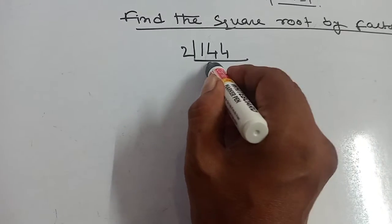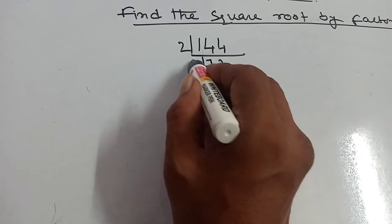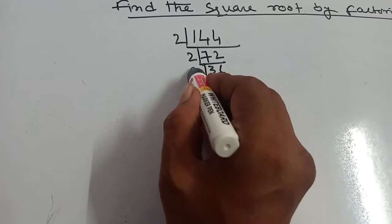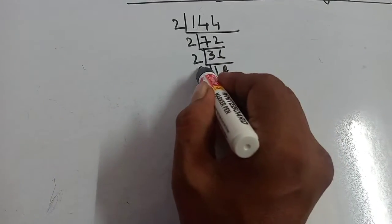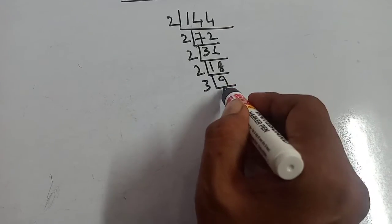Now this will be 72. Now again divided by 2, 36. Now 2, 18. Now 2, 9. Now 3, 3.